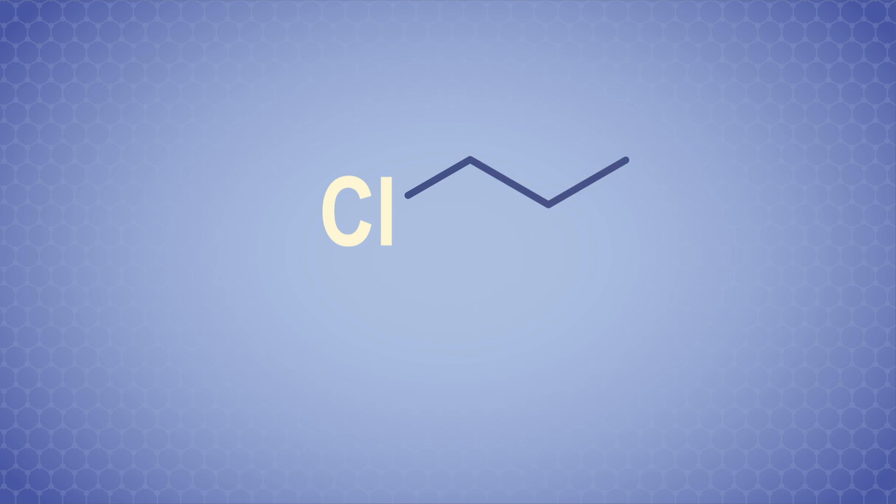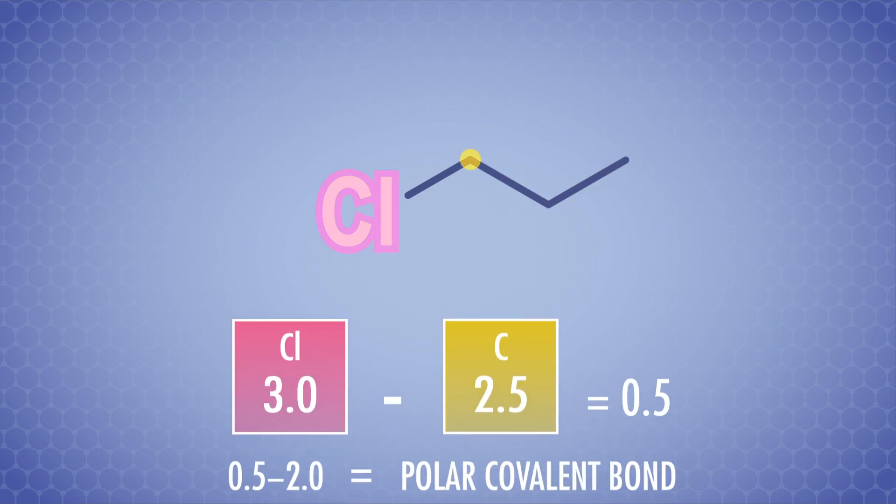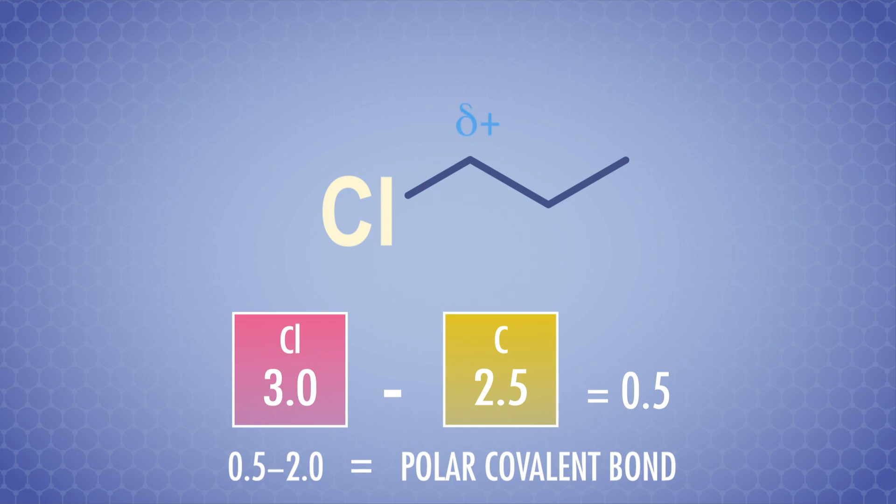But there's a bigger electronegativity difference between carbon and chlorine, so that's a polar covalent bond. We have a partial positive charge on the carbon and a partial negative charge on the chlorine, which means that the electrons of the carbon-chlorine bond are being pulled unequally in that one spot. And that means that we have a dipole, folks!